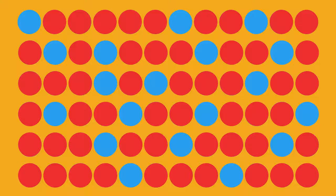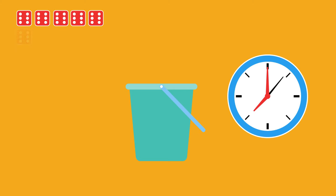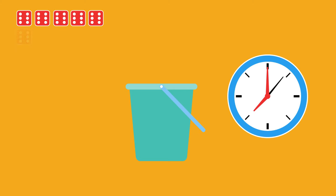You could have a bucket of 100 dice and after each emptying of the bucket, remove all the ones that show a six. Repeat until you have about 50 dice left. How long did it take? That's one half-life.